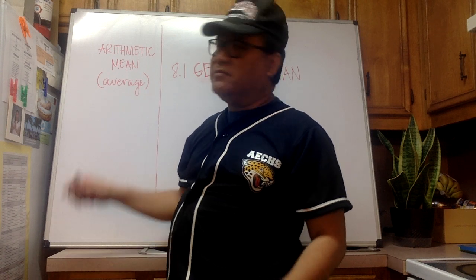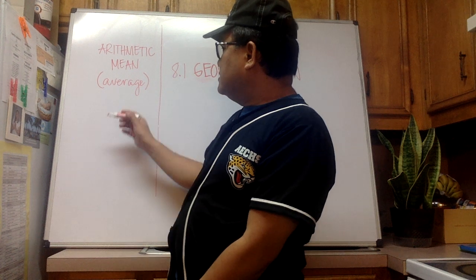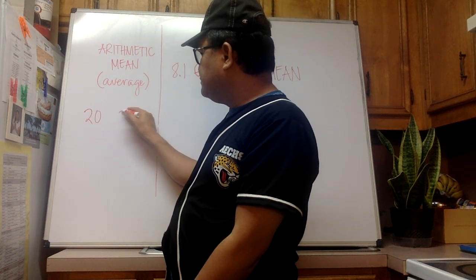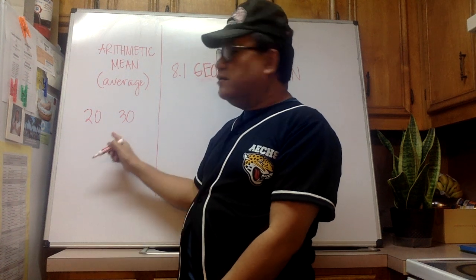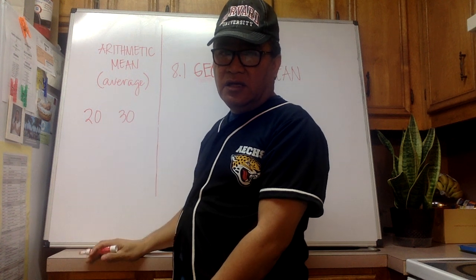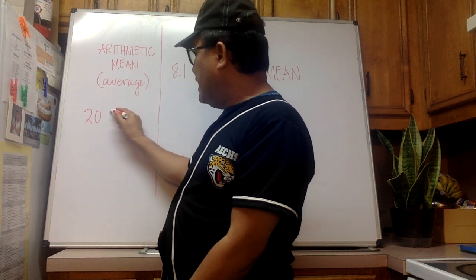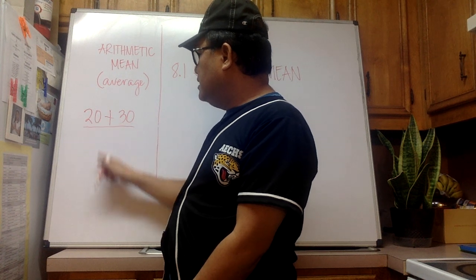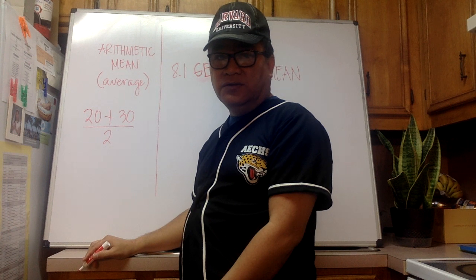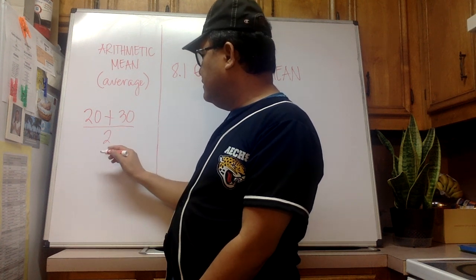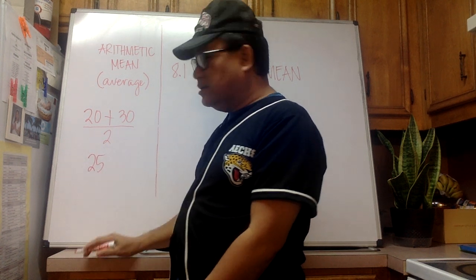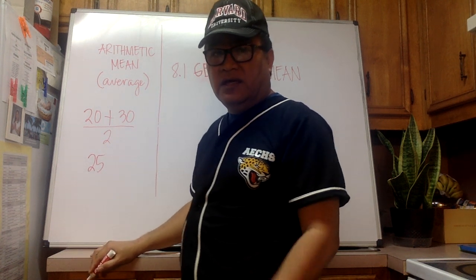Say for example we're given two numbers, 20 and 30, and we are interested in the arithmetic mean or average of those two numbers. All we need to do is just add the two numbers and then divide by 2 since there are two of them. 20 plus 30 is equal to 50, 50 divided by 2 is 25. Therefore the answer is 25.